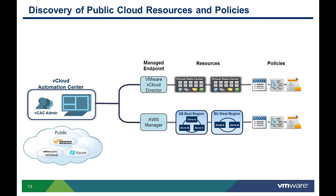In the case of VMware vCloud, resources are virtual data centers and software-defined services associated with those virtual data centers. In the case of Amazon Web Services, those resources are geographic regions, availability zones, and their associated policies and services.